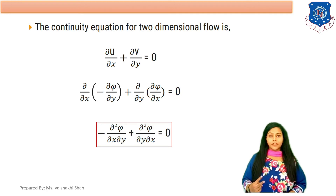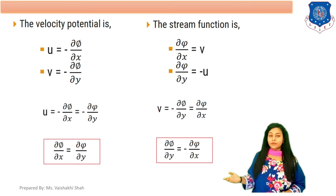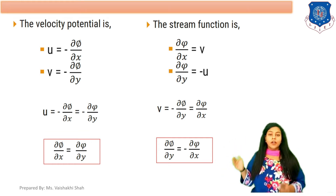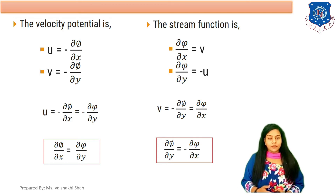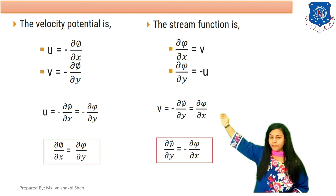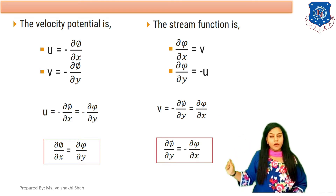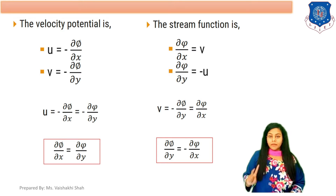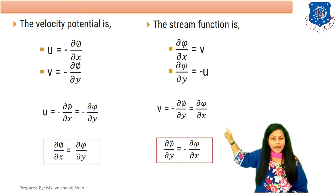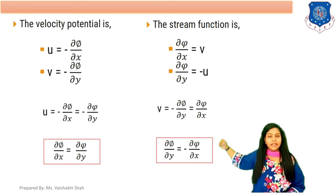We discussed two types of functions: first, velocity potential function phi, and second, stream function psi. Now we use the relationship between stream function and velocity potential function. To revise: for velocity potential function, u equals minus del phi by del x and v equals minus del phi by del y. For stream function, v equals del psi upon del x and u equals minus del psi by del y.